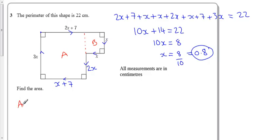The area of A, well it's a rectangle. It looks a bit like a square but it's a rectangle. It's 3x times x plus 7. We know 3x is 3 lots of 0.8, which is 2.4, and this distance down here is 7.8.